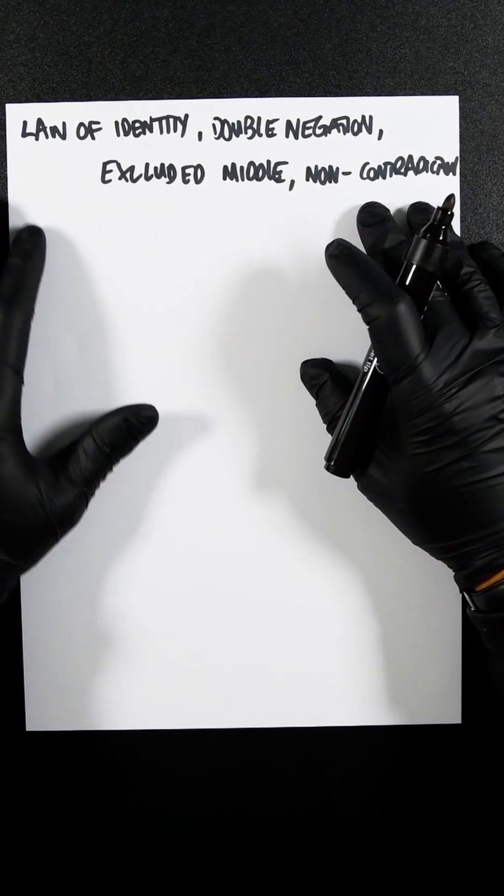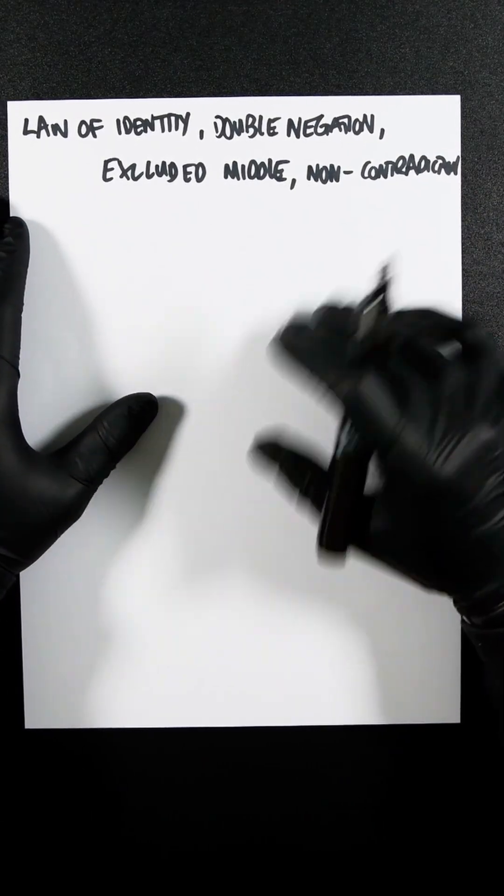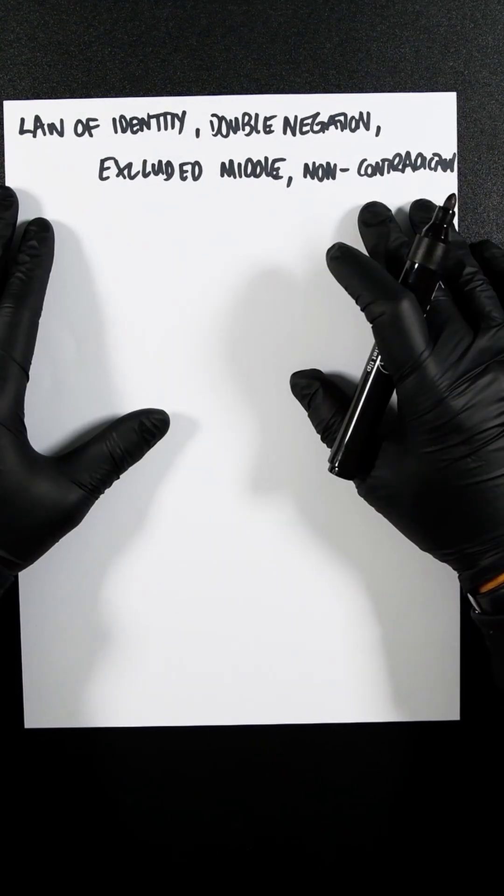I'm going to cover four laws: the law of identity, double negation, excluded middle, and non-contradiction. This is found in propositional logic.